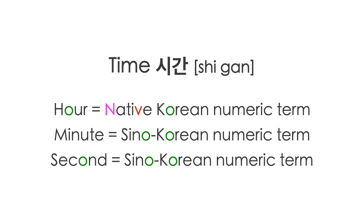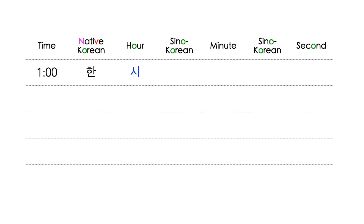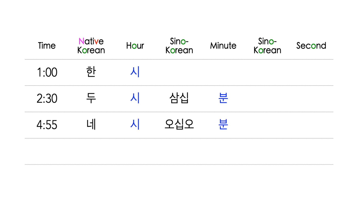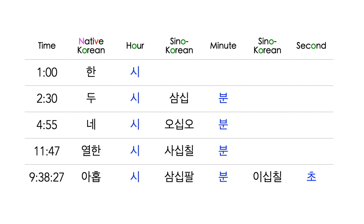To say a time in Korean, you have to follow this rule: native Korean numbers must be used for hours and Sino-Korean numbers must be used for minutes and seconds. For example: 1 o'clock is 한 시. 2:30 is 두 시 삼십 분. 4:55 is 네 시 오십 오 분. 11:47 is 열한 시 사십 칠 분. 9 hours 38 minutes and 27 seconds is 아홉 시 삼십 팔 분 이십 칠 초.